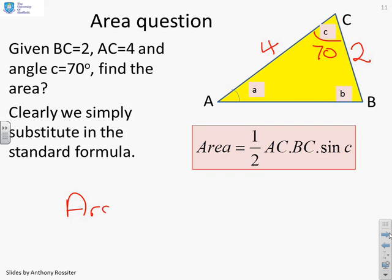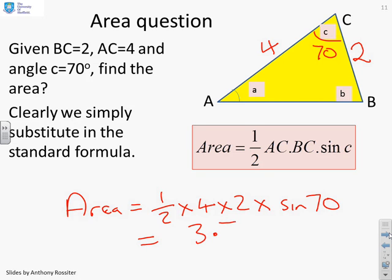So in other words, the area equals a half times 4 times 2 times the sine of 70. And if I plug that into my calculator, I'm going to get 3.76. I'm not going to worry about units here.